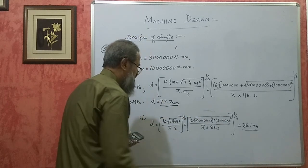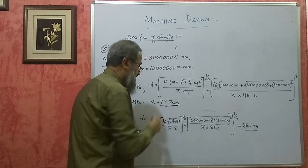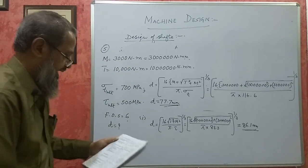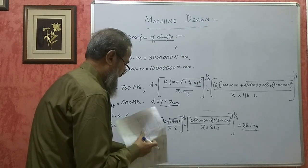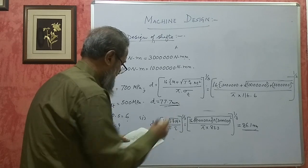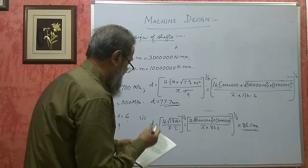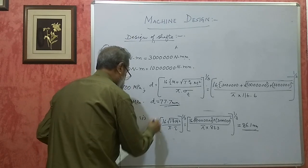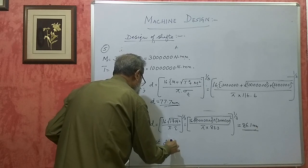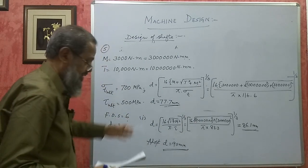Comparing: from maximum shear stress theory D = 86.1 mm; from maximum normal stress theory D = 77 mm. Since 86 mm is bigger, that is the governing value. After 85 mm the next standard size available is 90 mm. So adopt diameter of shaft D = 90 mm. That is the answer for this problem.